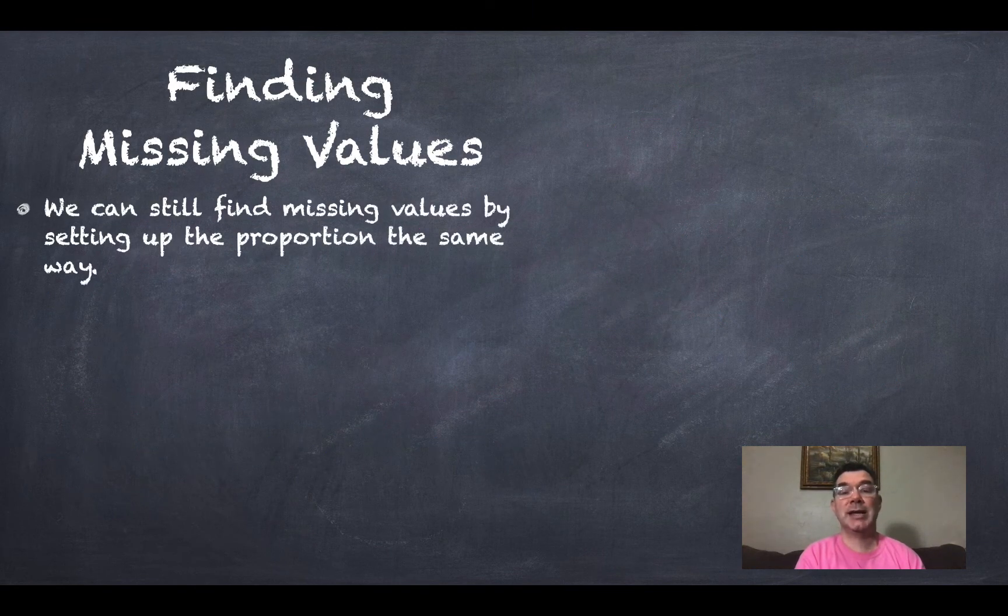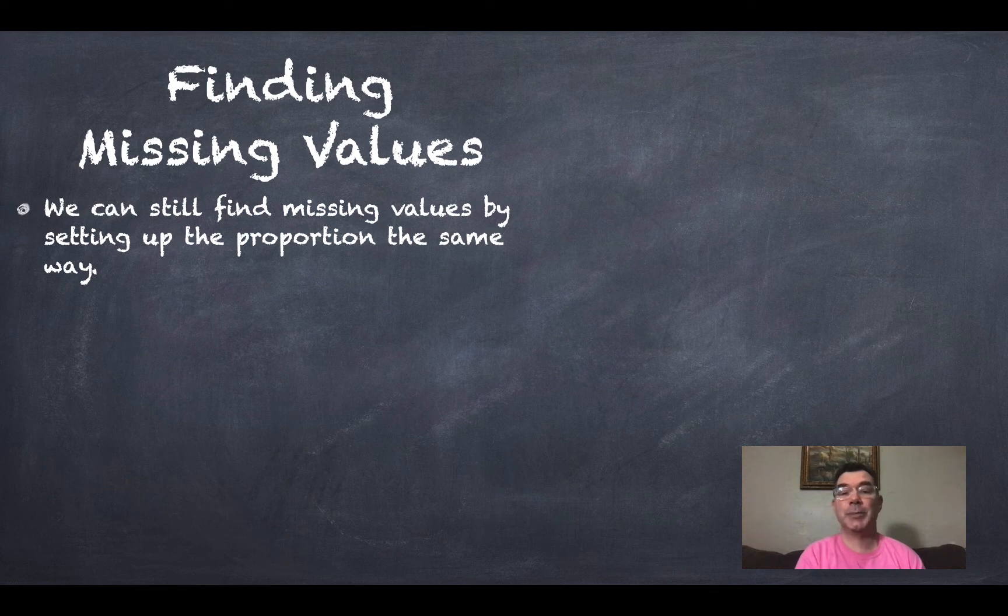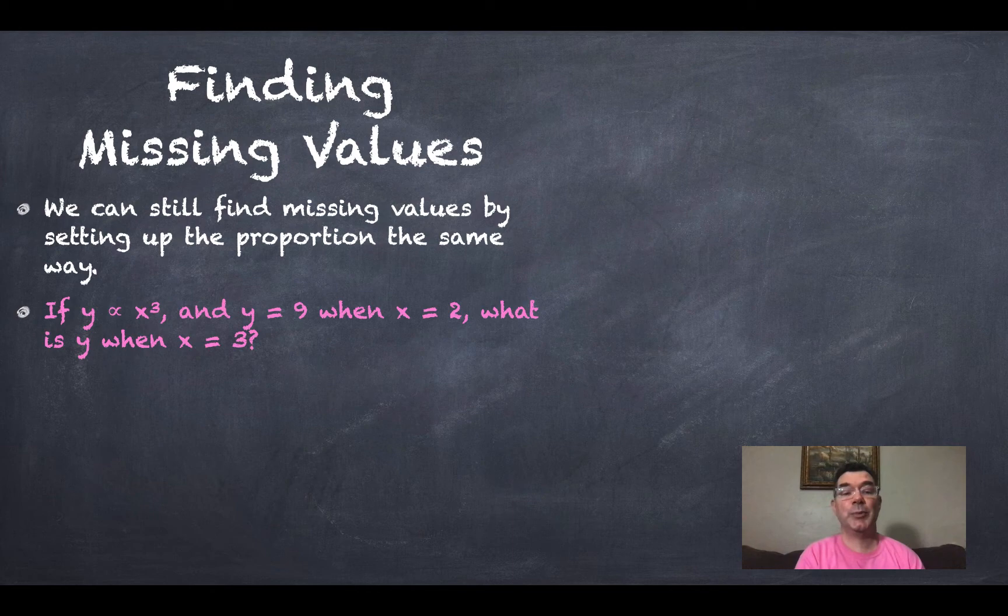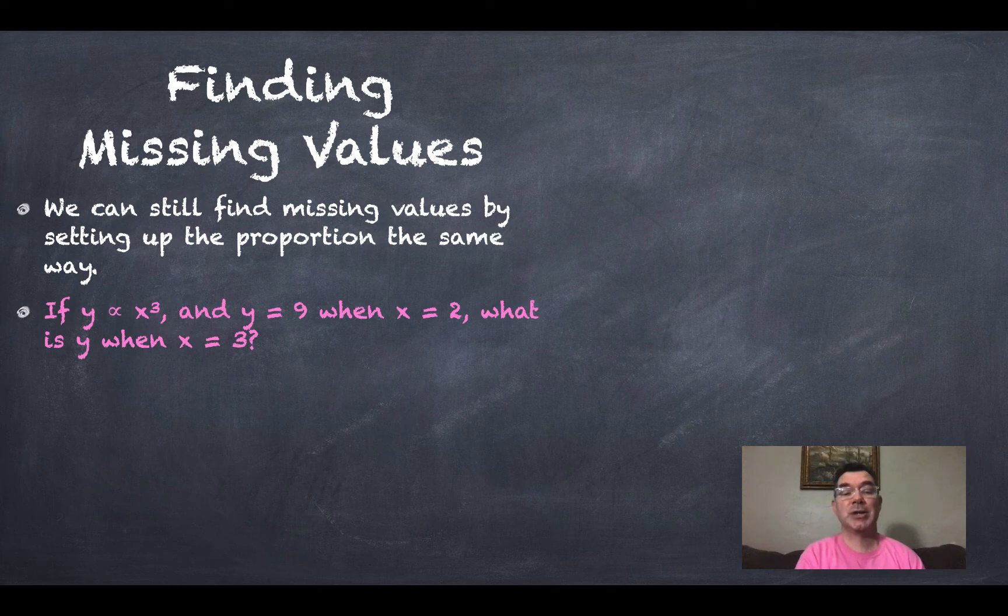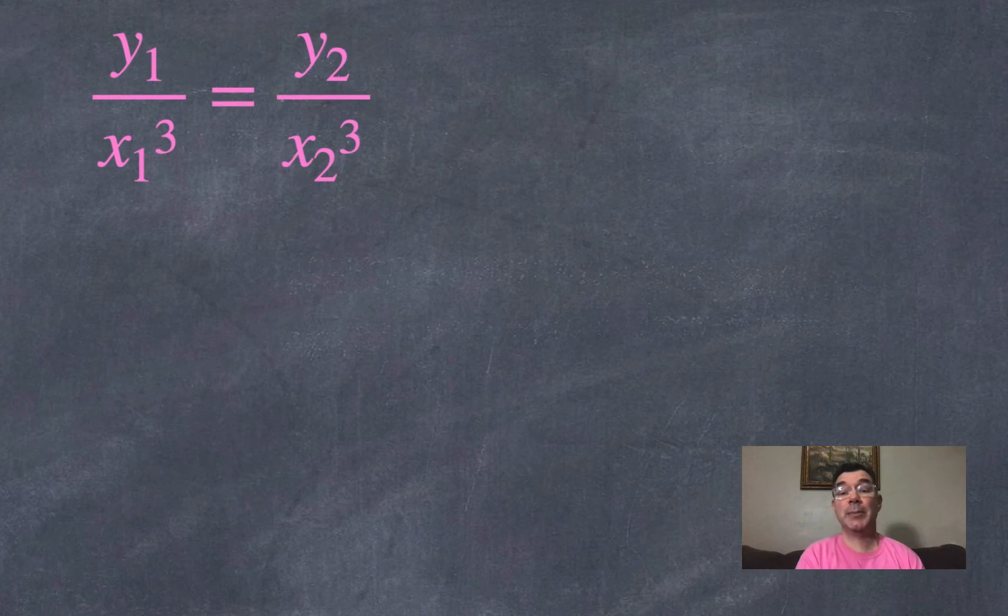And we can use this as well as we used just simple direct variation to find any missing values. I set up the proportion the same way, but I remember to include the exponents. So if y is proportional to x cubed and y is 9 when x is 2, then what is y going to equal when x is equal to 3? So I set up my proportion.